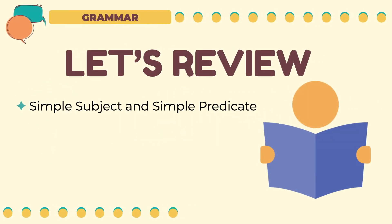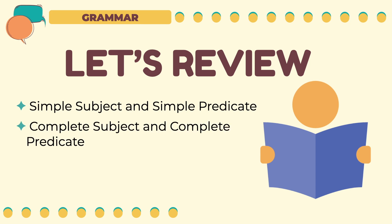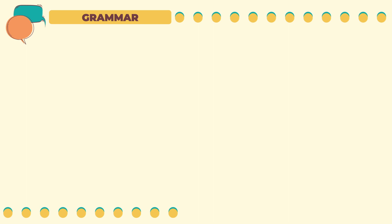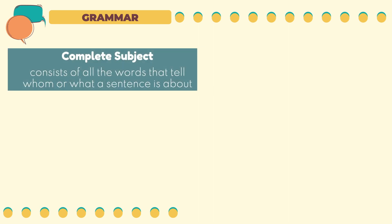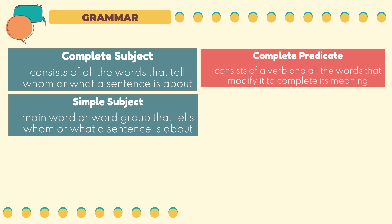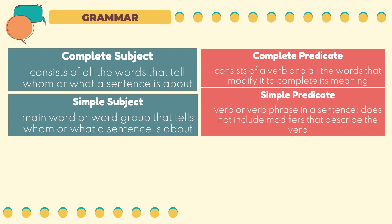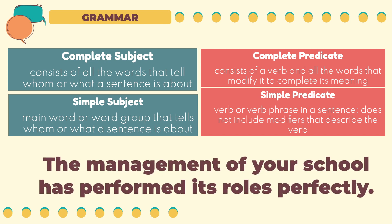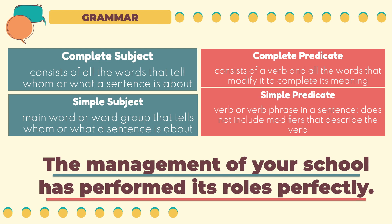Let's first have a review on the following. A complete subject consists of all the words that describe whom or what a sentence is about. A simple subject is just the main word or word group that tells whom or what a sentence is about. A complete predicate consists of a verb and all the words that modify it to complete its meaning, while a simple predicate is the verb or verb phrase in the sentence and does not include the modifiers. For example: 'The management of your school has performed its roles perfectly.' The complete subject is 'the management of your school,' and the complete predicate is 'has performed its roles.' The simple subject is 'the management,' and the simple predicate is 'has performed.'